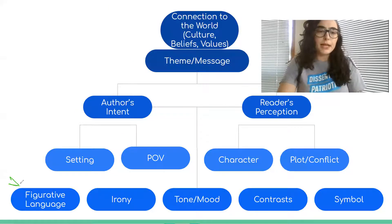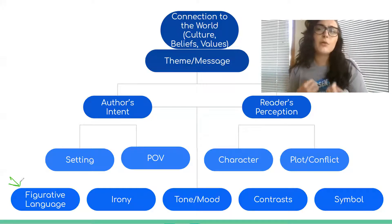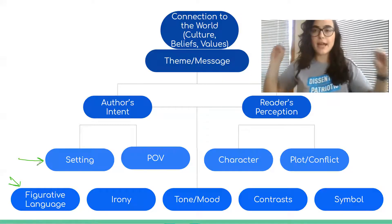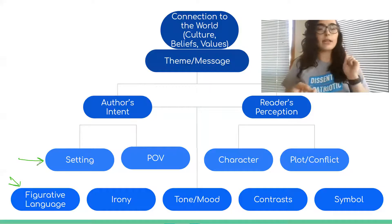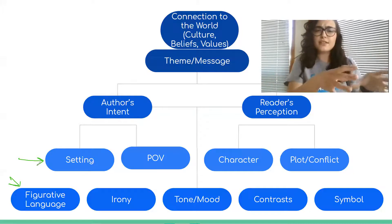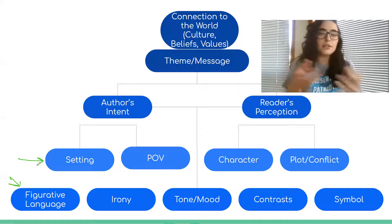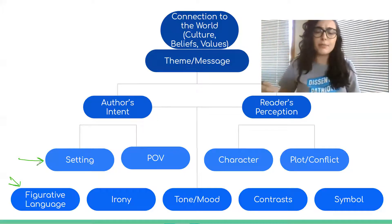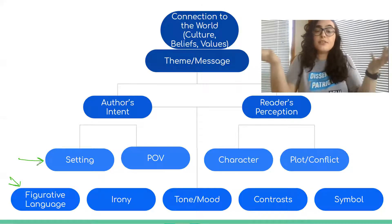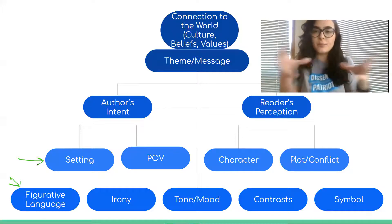The bottom layer of the chart contains more advanced things to think about when talking about literature, while the row above contains what must be necessary when analyzing literature: setting, character, point of view, and plot — those are the basic elements. Author's intent connects to setting and point of view, and reader's perception connects to character and plot, though you could rearrange those. Tone and mood are connected because they sort of bounce between intent and perception — we'll get to that.